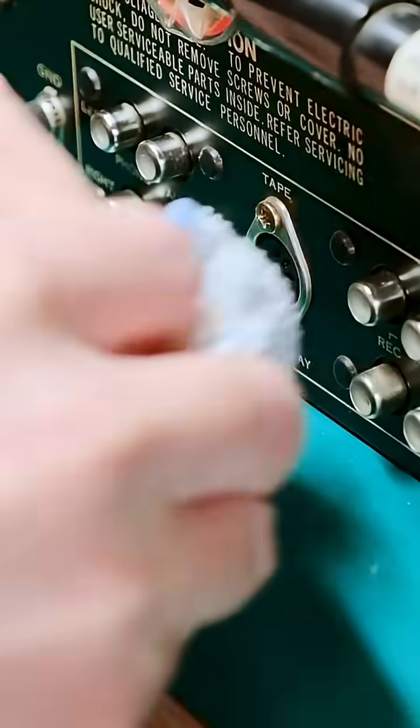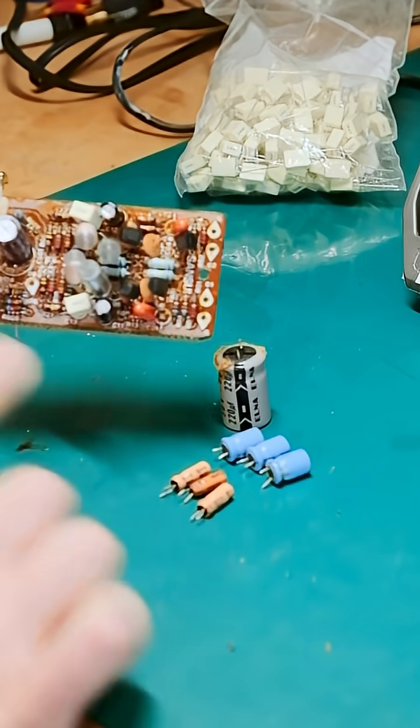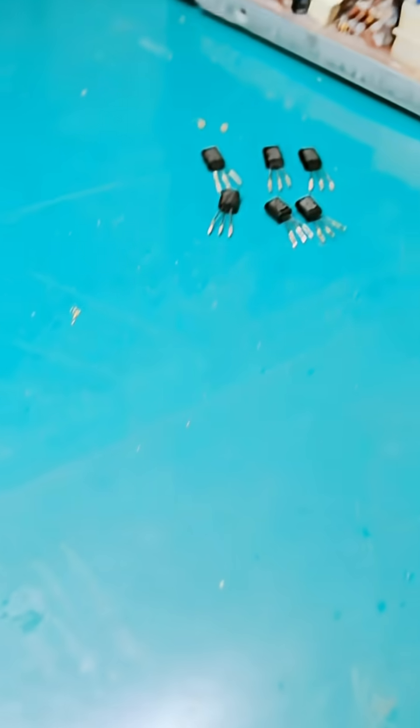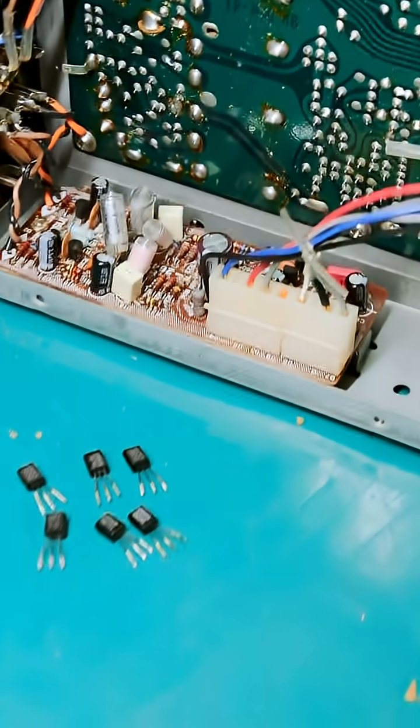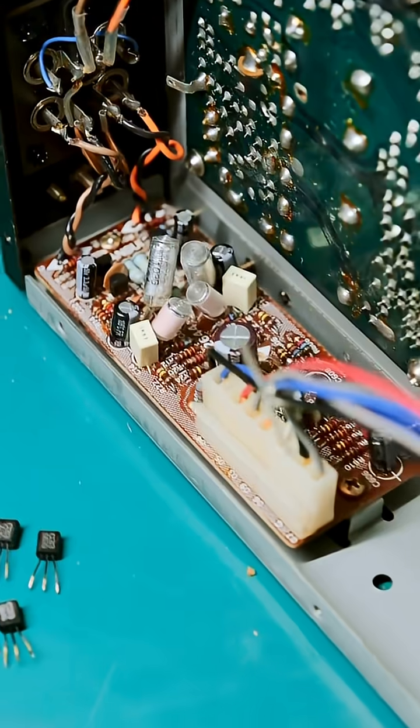Then I actually got into the phono amp, so I replaced all seven electrolytic capacitors first and I finished it off by replacing these six transistors and cleaning all the flux off the back side. Look at how much cleaner that square wave is now.